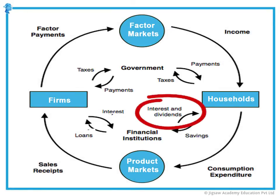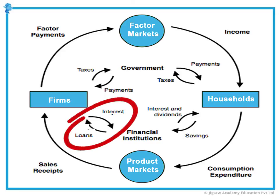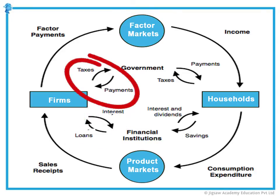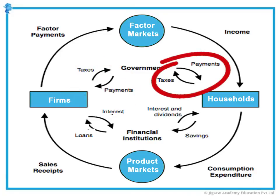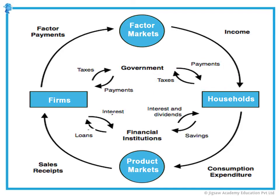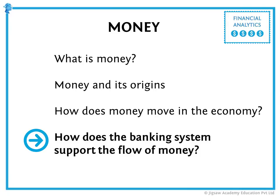Banks and financial institutions pay interest to householders for the money that they utilize. This money, which is stored with them, is lent out to farms and companies as loans to start businesses. These farms and companies, in turn, pay interest to these financial institutions. They also pay taxes to the government, and the government buys goods and services from these farms and companies. The government makes payments to householders who are government employees, and everyone also pays taxes to the government. There is a smaller cycle within this larger cycle, and this circular flow of money keeps the economy thriving.